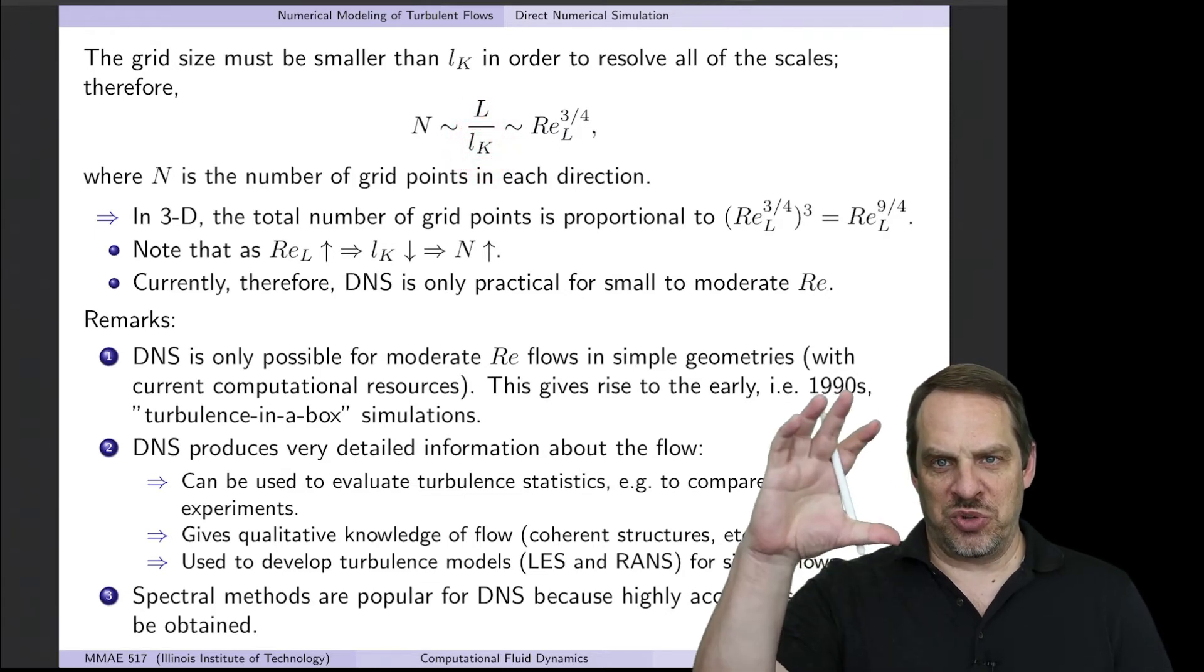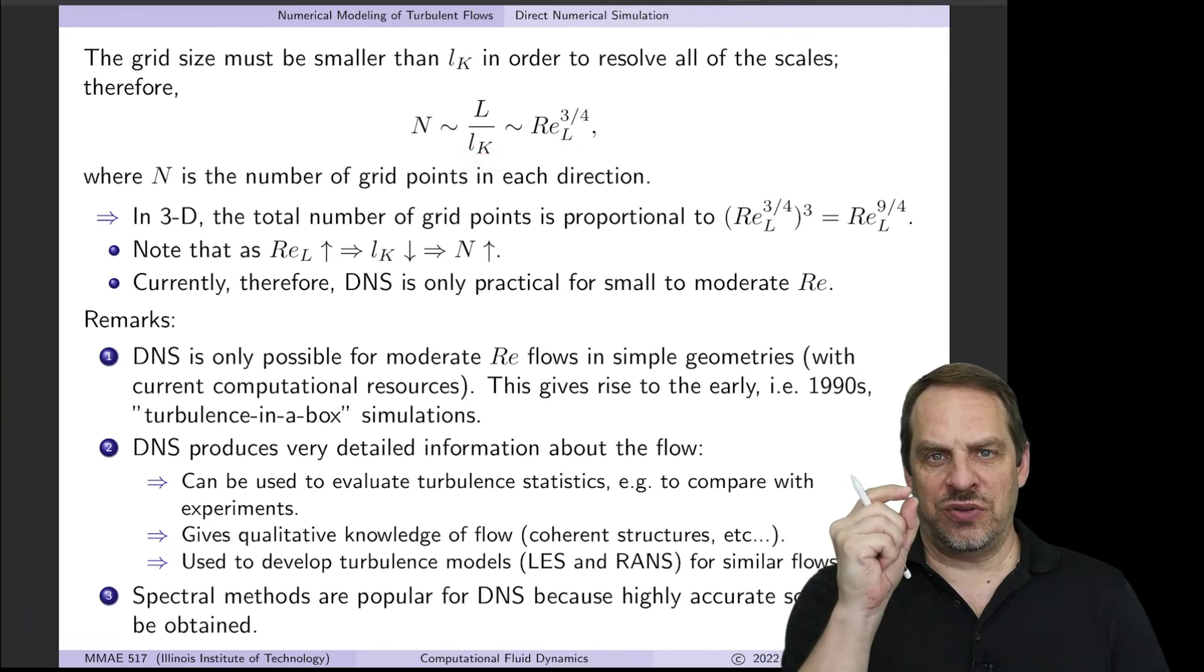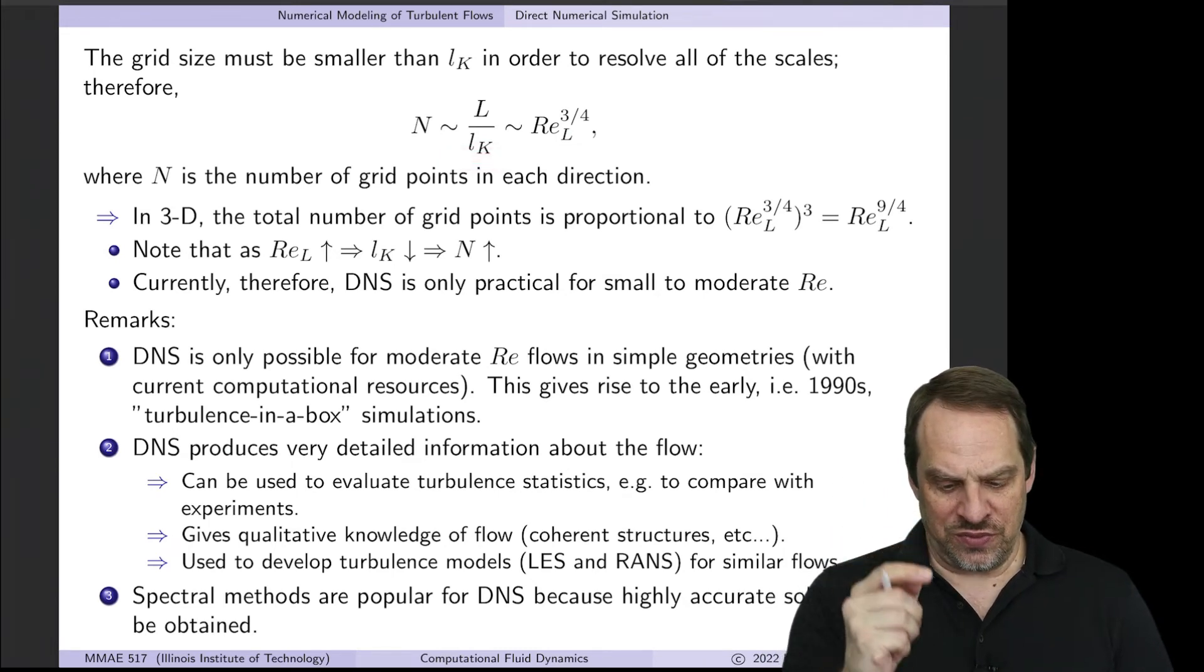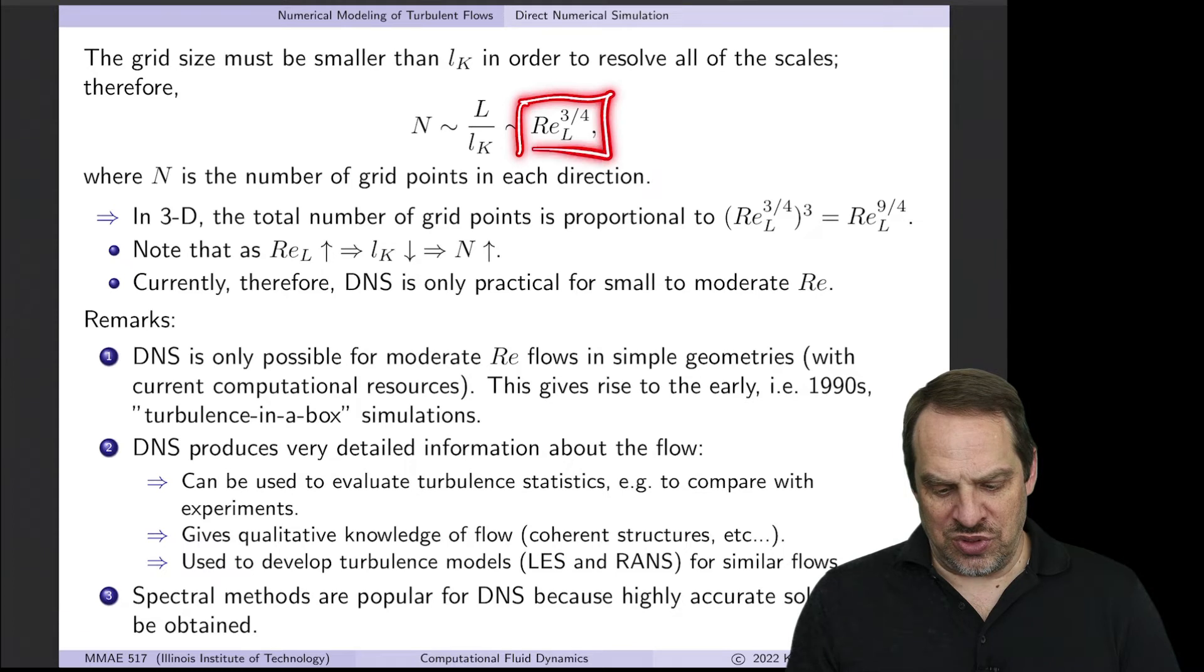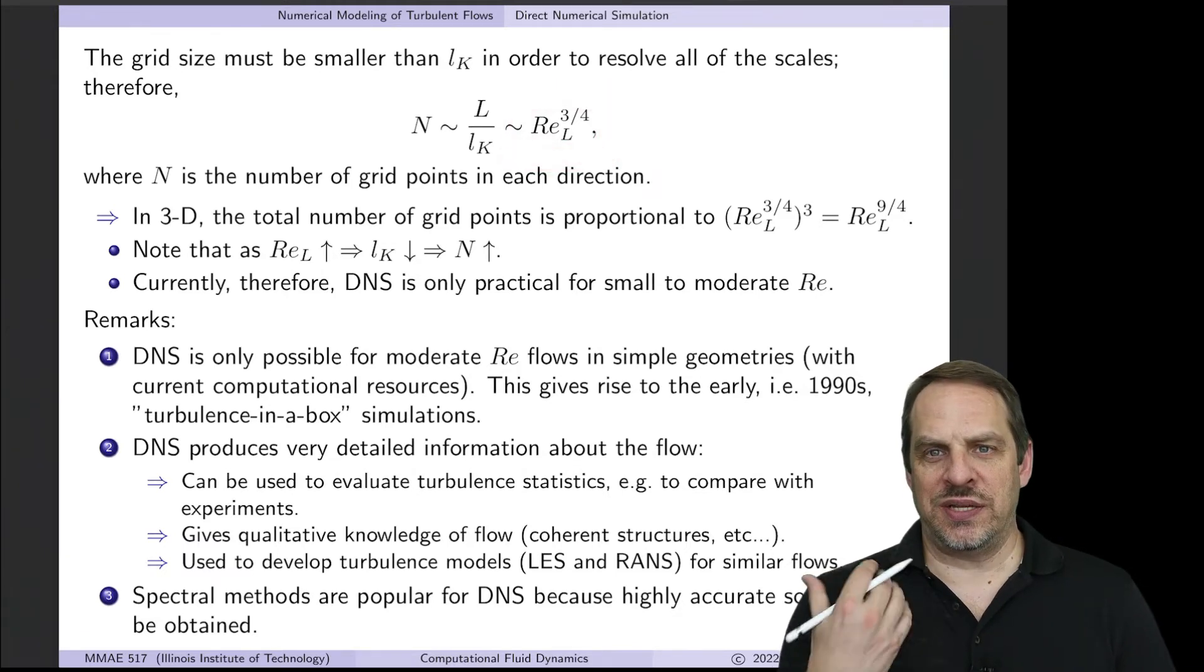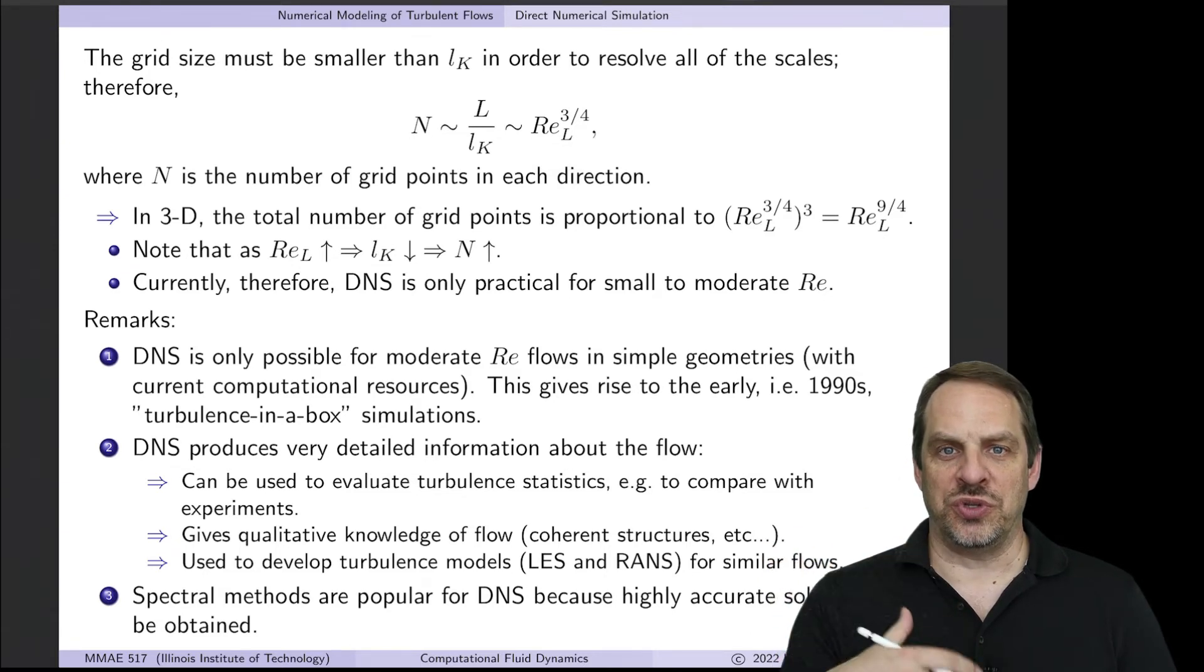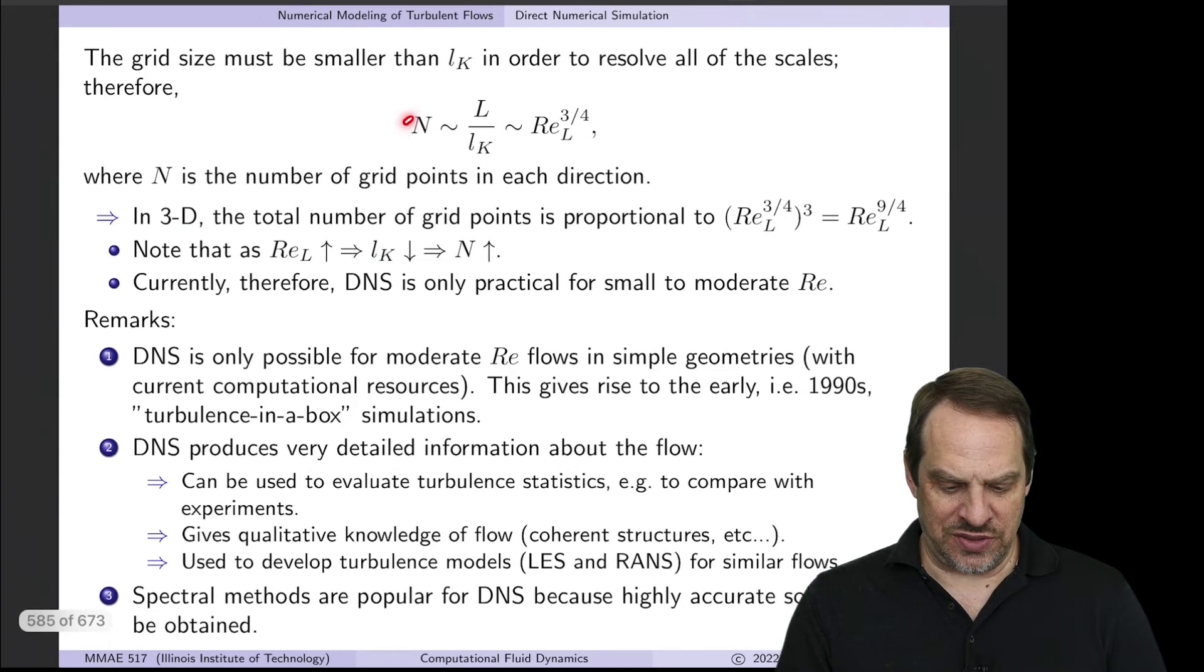So the number of points in each direction is directly proportional to the big L over little l_k. So remember the big L is the overall eddy sizes, whereas the l_k is the Kolmogorov scale, the smallest scale that we need to resolve. That corresponds to an Re_L to the three quarters. So that gives us an estimate based on the Reynolds number.